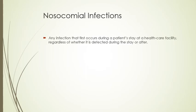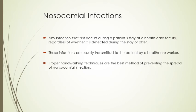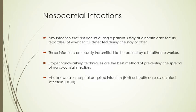A nosocomial infection is any infection that first occurs during a patient's stay at a healthcare facility — whether a hospital, nursing home, or any healthcare setting — regardless of whether it was detected during the stay or after. These infections are usually transmitted to the patient by a healthcare worker. This is why infection control measures — universal precautions and standard precautions — are so important. Proper handwashing is the best method to prevent nosocomial infections, also known as hospital-acquired infections (HAI) or healthcare-associated infections (HCAI).